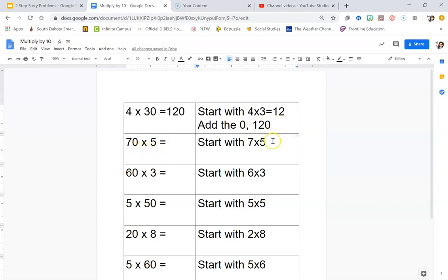So 70 times 5. You're going to start with 7 times 5 and you should get 35 when you multiply 7 times 5. Then you're going to add the 0 on the end and your answer should be 350.